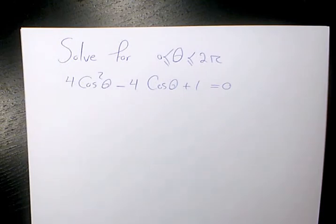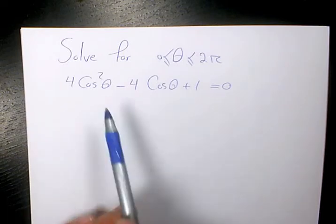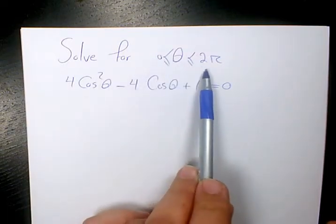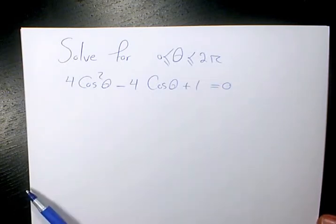In this video I want to show you how to solve trigonometric equation and the equation I selected for you is 4 cosine squared theta minus 4 cosine theta plus 1 equals to 0. And we need to solve it for theta and theta must be between 0 and 2 pi.